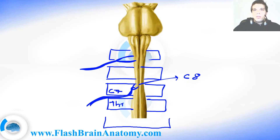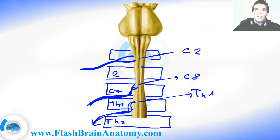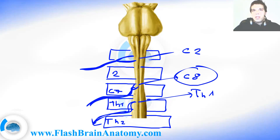Then comes another vertebra, TH2. The spinal nerve leaves between TH1 and TH2, so this segment of the spinal cord is called TH1. So first we had the situation where the spinal nerve leaves above the vertebra — that segment is called C2. But here it leaves below — the spinal nerve leaving under TH1 is called segment TH1. The rule changes around the C8 segment: up through C7 the nerve exits above its corresponding vertebra, but from C8 onwards it exits below.